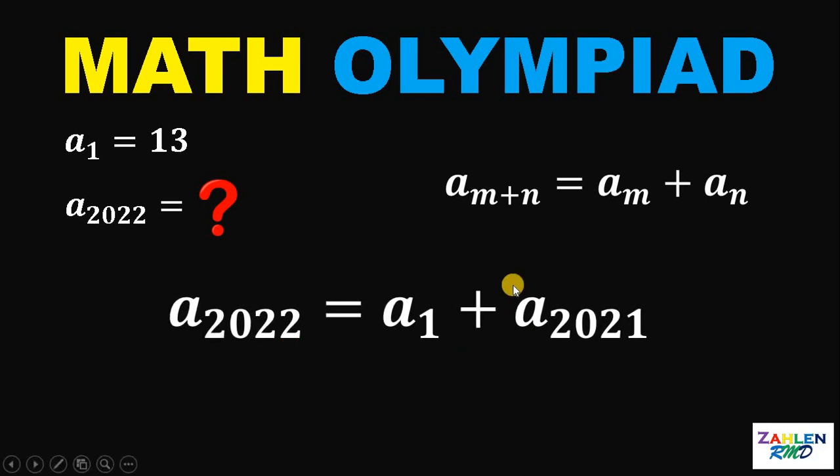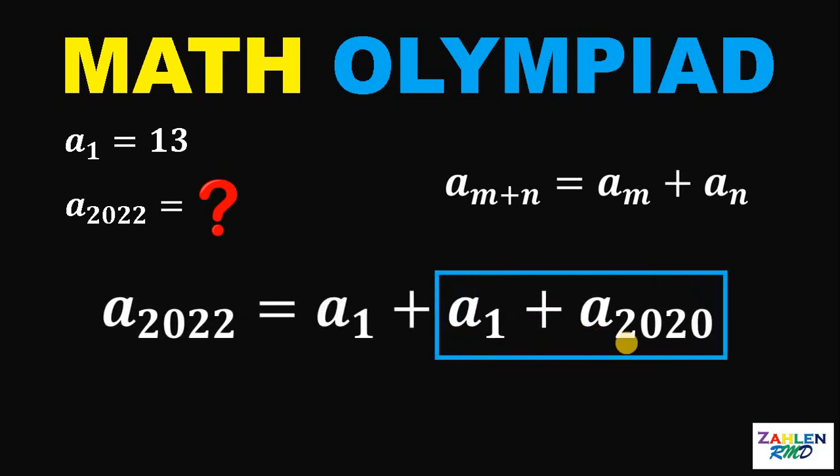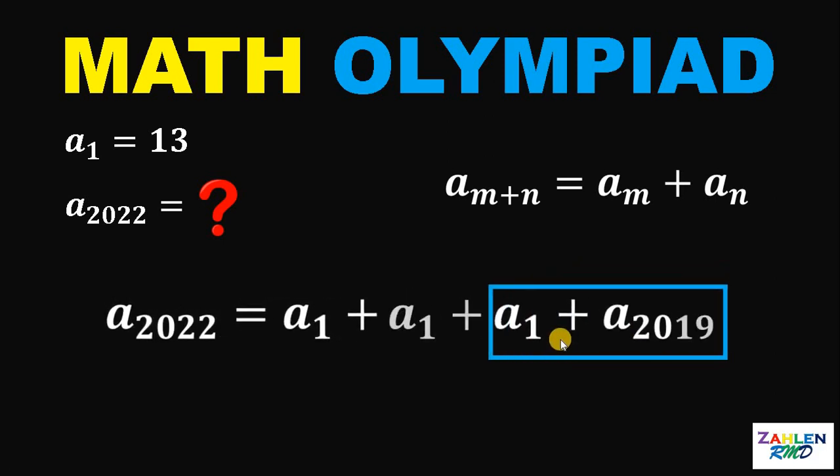Now, let's focus on this term a sub 2021. Now a sub 2021 can be written as 1 plus 2020. Therefore, this can be written as a sub 1 plus a sub 2020. Let's keep going. Let's focus on this term a sub 2020. And we know this is 1 plus 2019. So a sub 2020 can be written as a sub 1 plus a sub 2019.